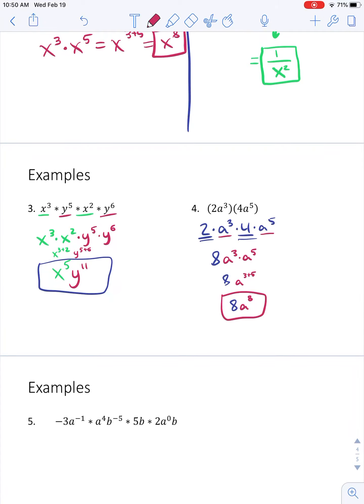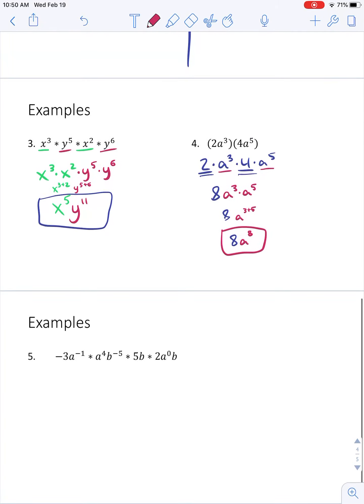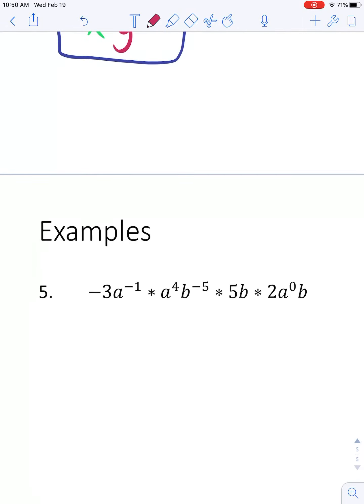And all we have left is one more challenging problem where we've got a lot of things going on. We've got numbers, which can be put together. We have a's, which can be put together. We have b's that can get put together. I see some negative exponents. I see some positive exponents. I see some zero exponents. There's a lot going on in this problem. I don't want to take care of the negative exponents yet, not until I put everything together that needs to go together.